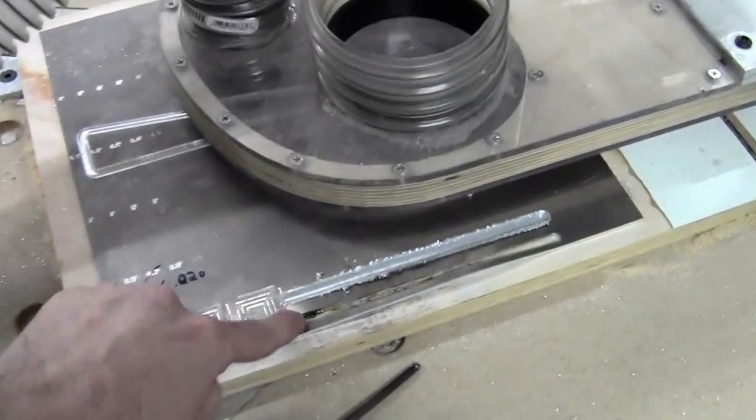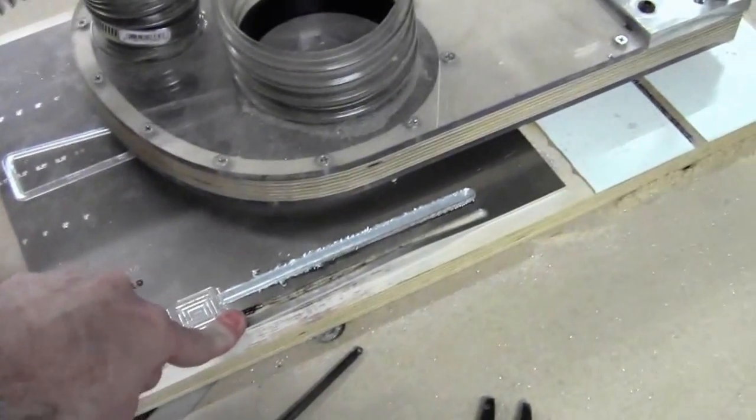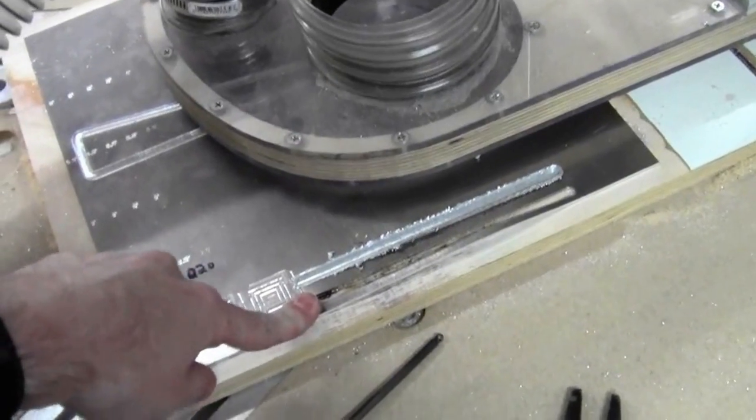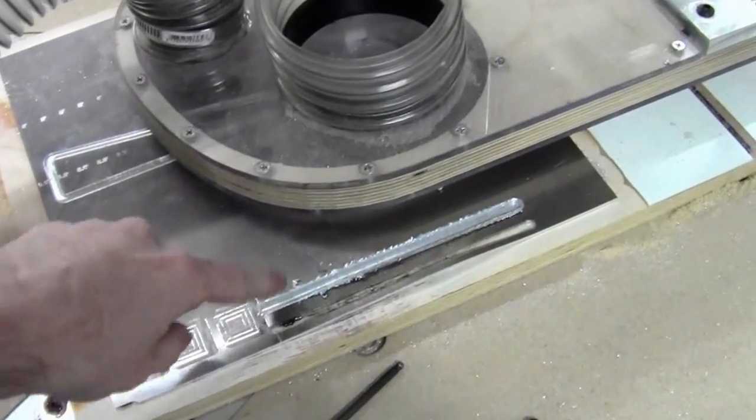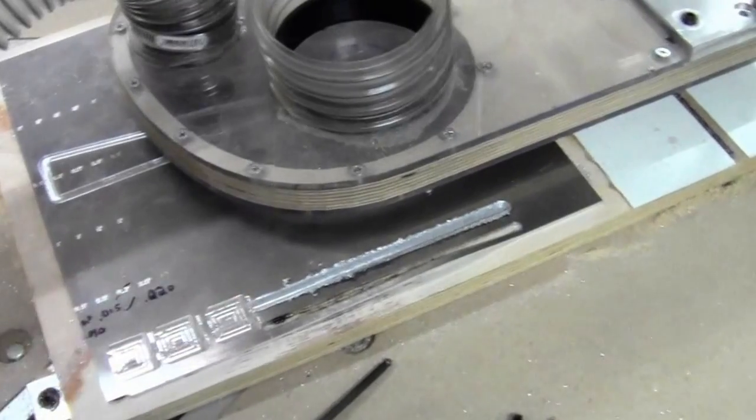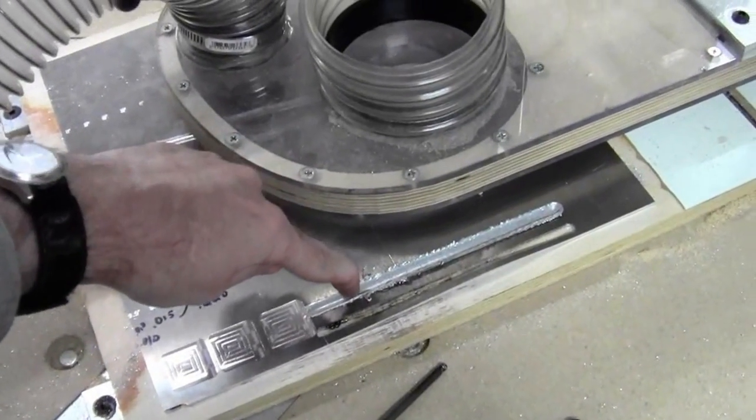Then the second pass, so the five thou per pass was awesome but it was 27 passes to get through this eighth inch thick stuff. So I have another program that was a 32nd of an inch per pass and that's what happened here. It got to about here and started making a bunch of noise.